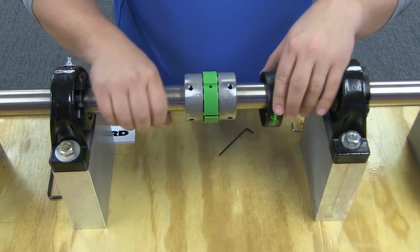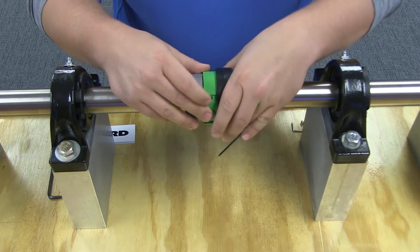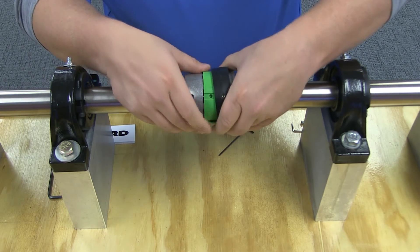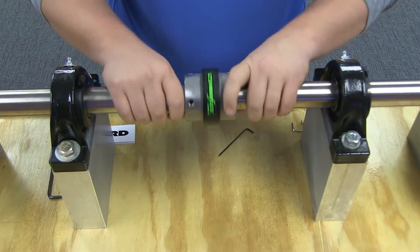To install the cover, move the cover alongside the element with the fastener hole of the cover approximately aligned with the locating slot on the element. A soft mallet may be needed to install the cover on larger sized couplings.